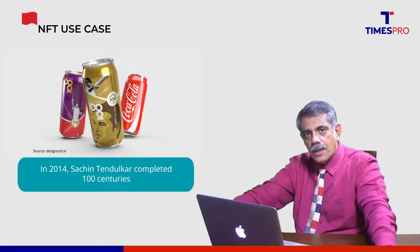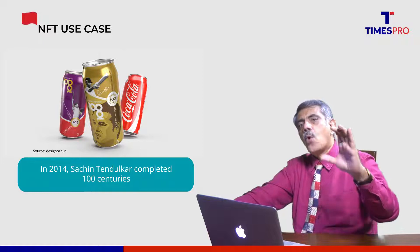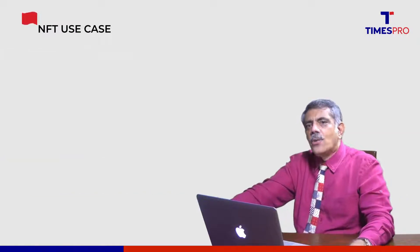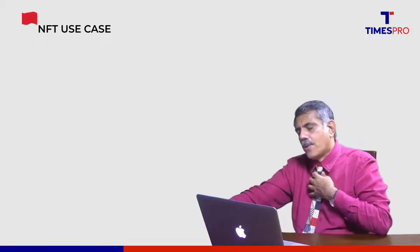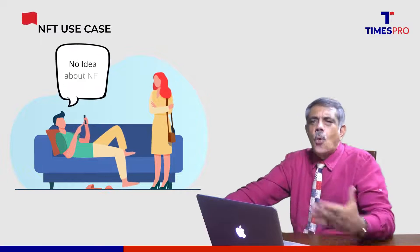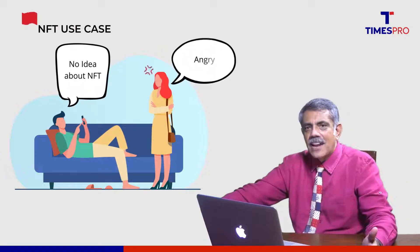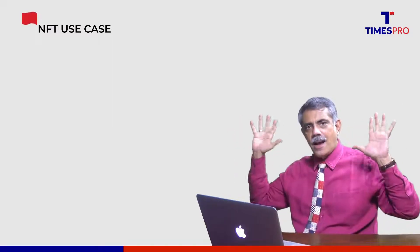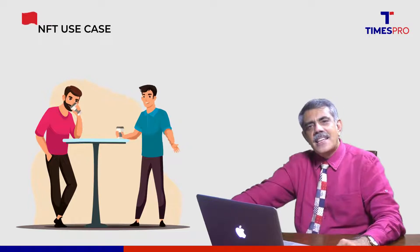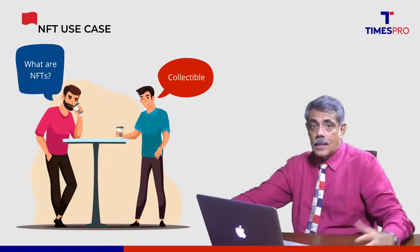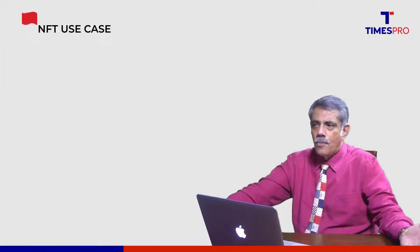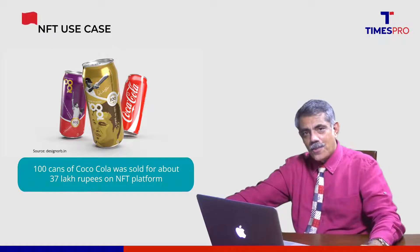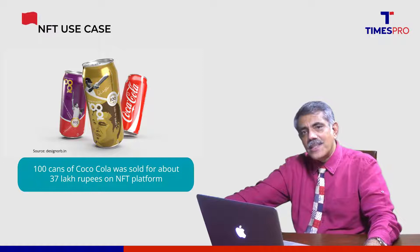Let me tell you my own story. In 2014, Sachin Tendulkar completed 100 test centuries, and Coca-Cola released a commemorative Coke can — each can described one of his centuries, numbered one through one hundred. I had a friend who collected all hundred cans but wanted to get rid of them because his wife was upset they were taking up space. So we mounted them on a big platform, put it up as an NFT, and said someone would love to own all hundred cans. We sold it for about 37 lakh rupees — that's a big number.